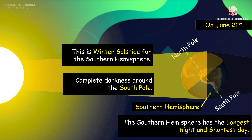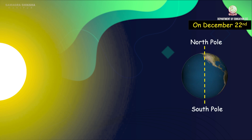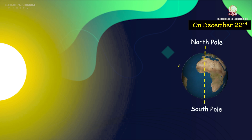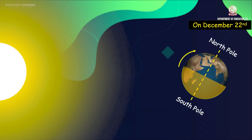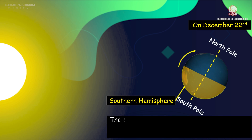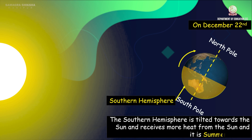The position of the earth on December 22nd is just opposite to the June 21st position. The southern hemisphere is tilted towards the sun, so the southern hemisphere experiences summer, while the northern hemisphere experiences winter.